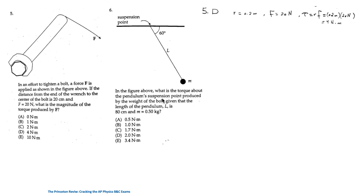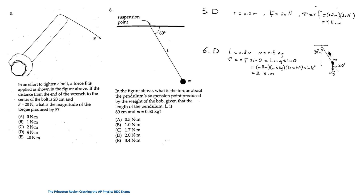For question 6, what is the torque about the pendulum suspension point produced by the weight of the bob, given that the length L is 80 centimeters and M = 0.5 kg? This is R × mg, but here the angle between them is 30°, not 90°. So the magnitude of torque is RF sinθ = L × mg × sin30°. Substituting gives 2 Newton·meters, answer D.